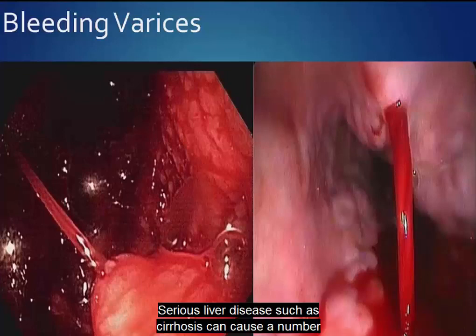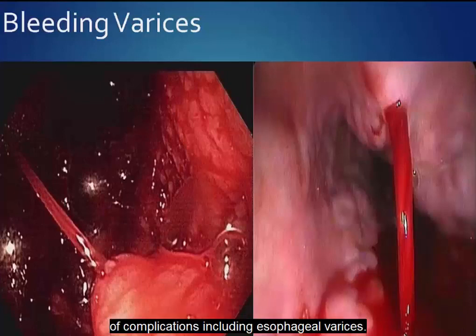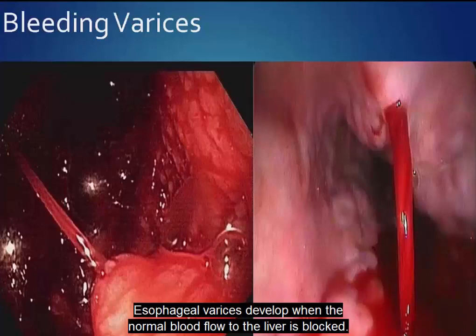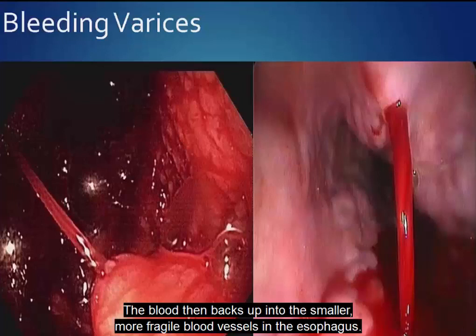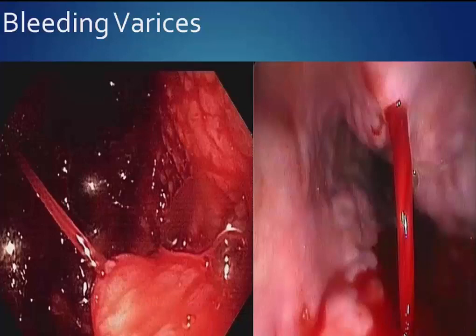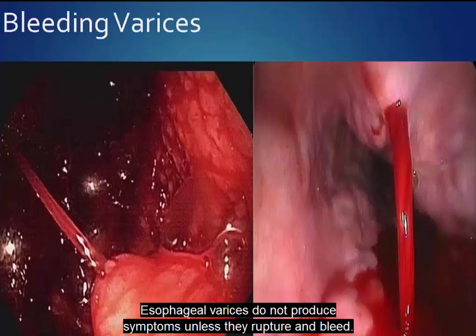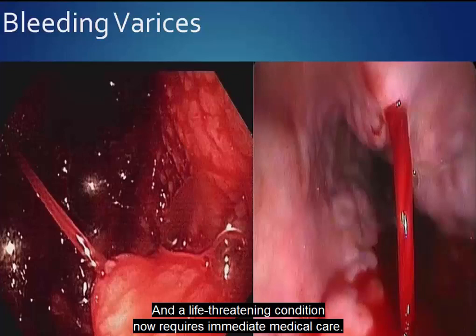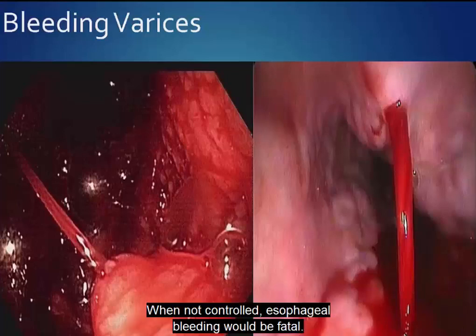Serious liver disease, such as cirrhosis, can cause a number of complications including esophageal varices. Esophageal varices develop when the normal blood flow to the liver is blocked. The blood then backs up into the smaller, more fragile blood vessels in the esophagus, and sometimes in the stomach or rectum, causing the vessels to swell. Esophageal varices do not produce symptoms unless they rupture and bleed, causing a life-threatening condition that requires immediate medical care. When not controlled, esophageal bleeding would be fatal.